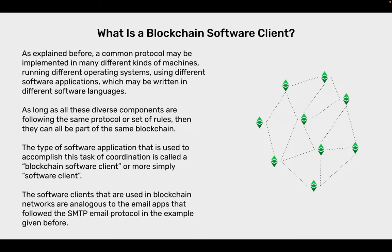What is a blockchain software client? As explained before, a common protocol may be implemented in many different kinds of machines, running different operating systems, using different software applications, which may be written in different software languages. As long as all these diverse components are following the same protocol or set of rules, then they can all be part of the same blockchain. The type of software application that is used to accomplish this task of coordination is called a blockchain software client, or more simply, software client. The software clients used in blockchain networks are analogous to the email apps that follow the SMTP email protocol in the example given before.